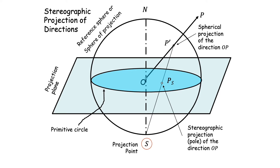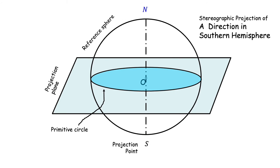The direction OP in three dimensions gives us a spherical projection P-prime on the sphere, which then comes to the projection plane as PS, the stereographic projection. But what happens if the direction is not going up into the northern hemisphere — instead it's going down into the southern hemisphere, like direction OQ? Since it goes down into the southern hemisphere it will intersect the sphere at Q-prime, and joining S to Q-prime gives a stereographic projection QS lying outside the primitive.